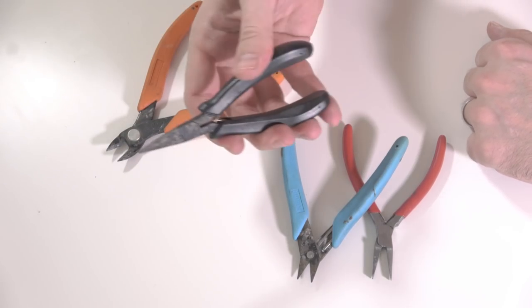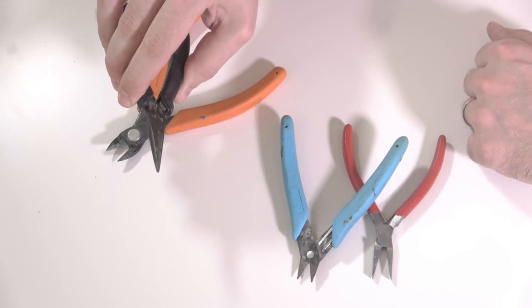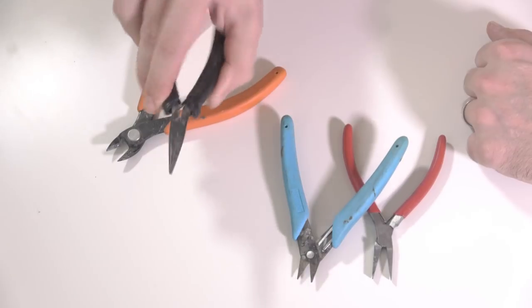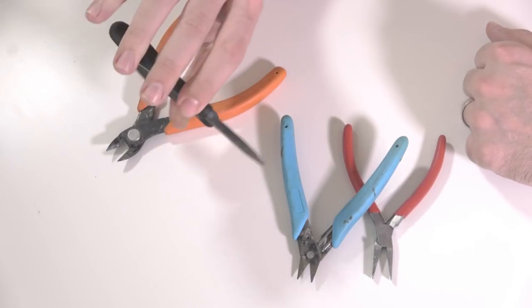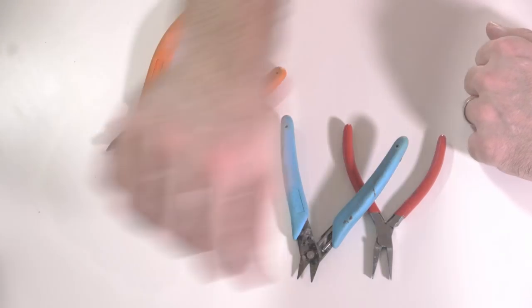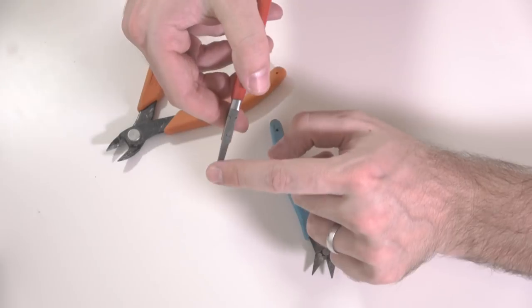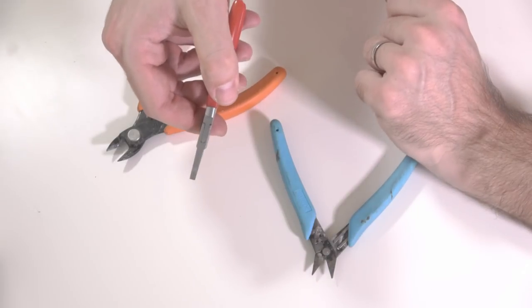A set of long flat nose pliers, very useful. If I was going to get one pair of pliers for bending and manipulating metal, it would be the flat nose pliers. These are excellent. I also have these ones which are squared off on the tip, these are most useful indeed.